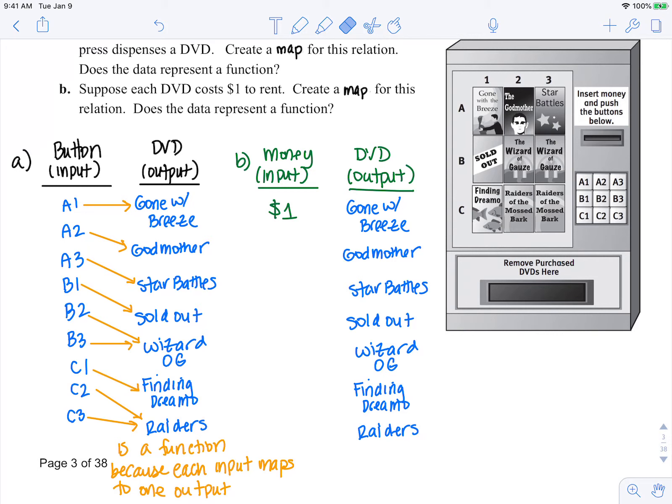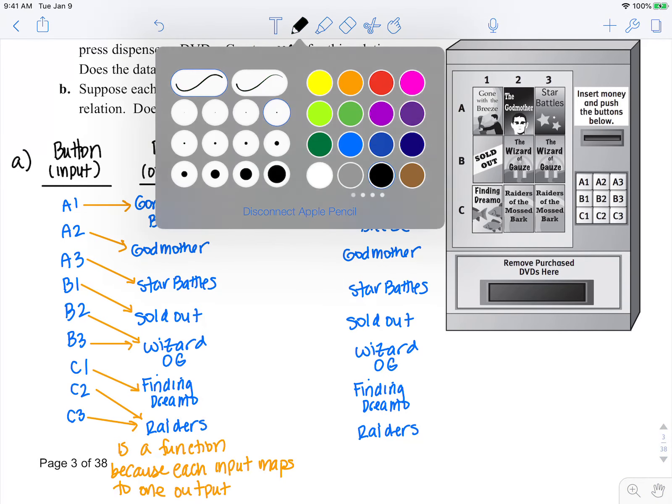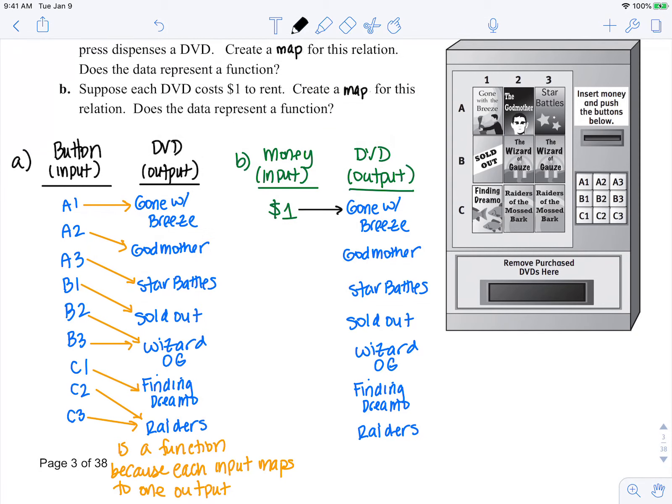So now let's see. You can input your dollar and get gone with the breeze. You could input your dollar and get godmother, star battles, sold out (hopefully not), wizard of gauze, finding dreamo, or raiders of the mossed bark.